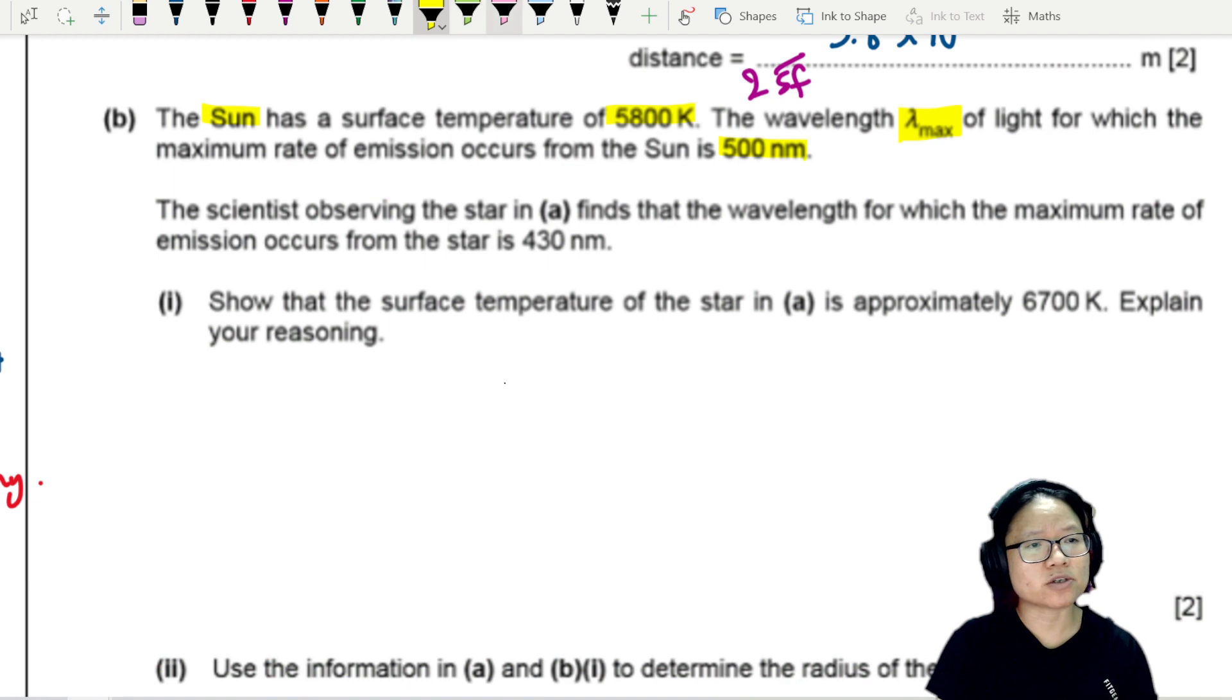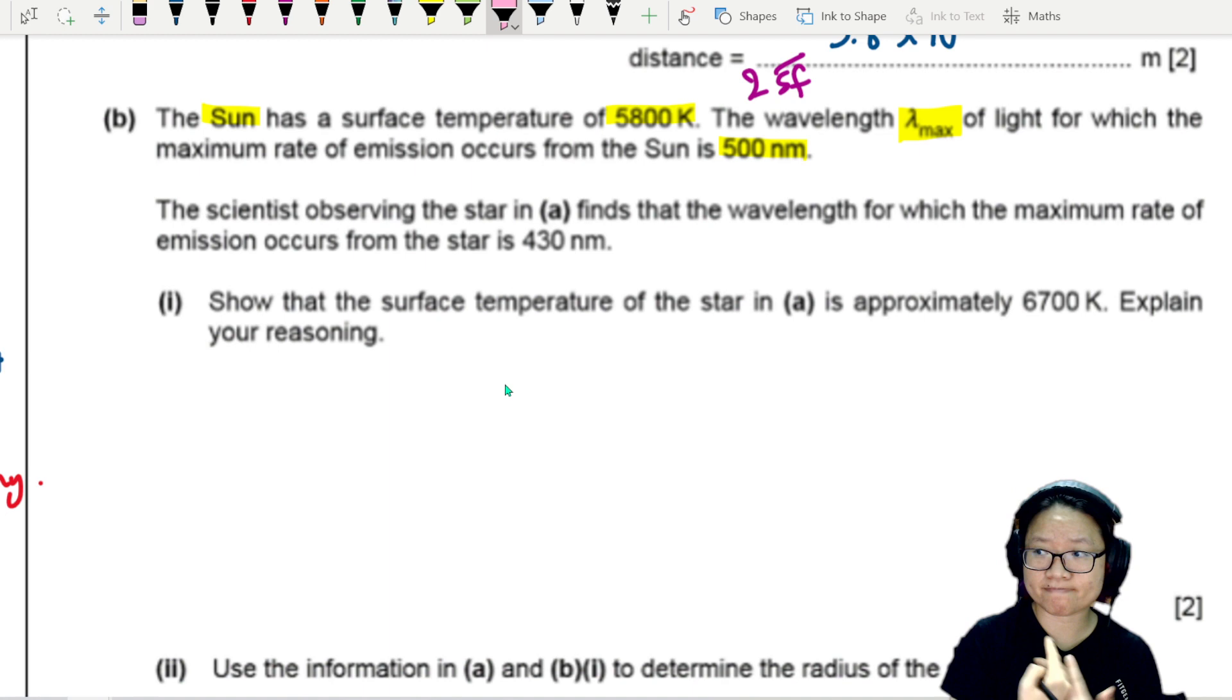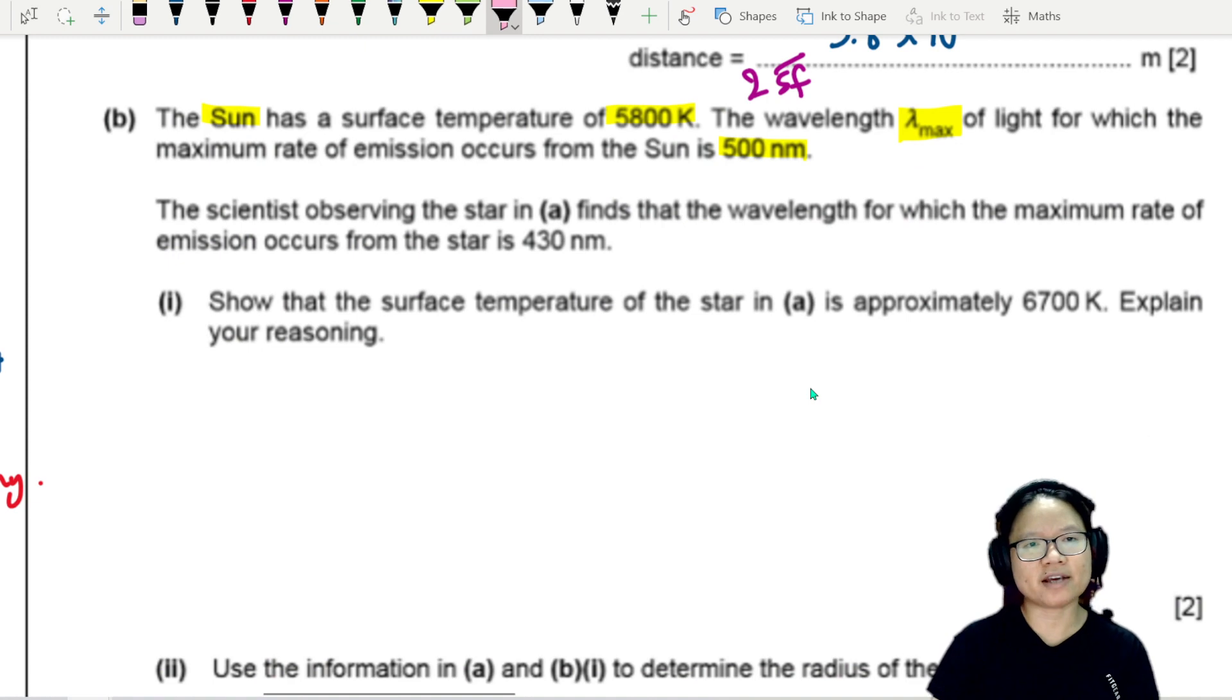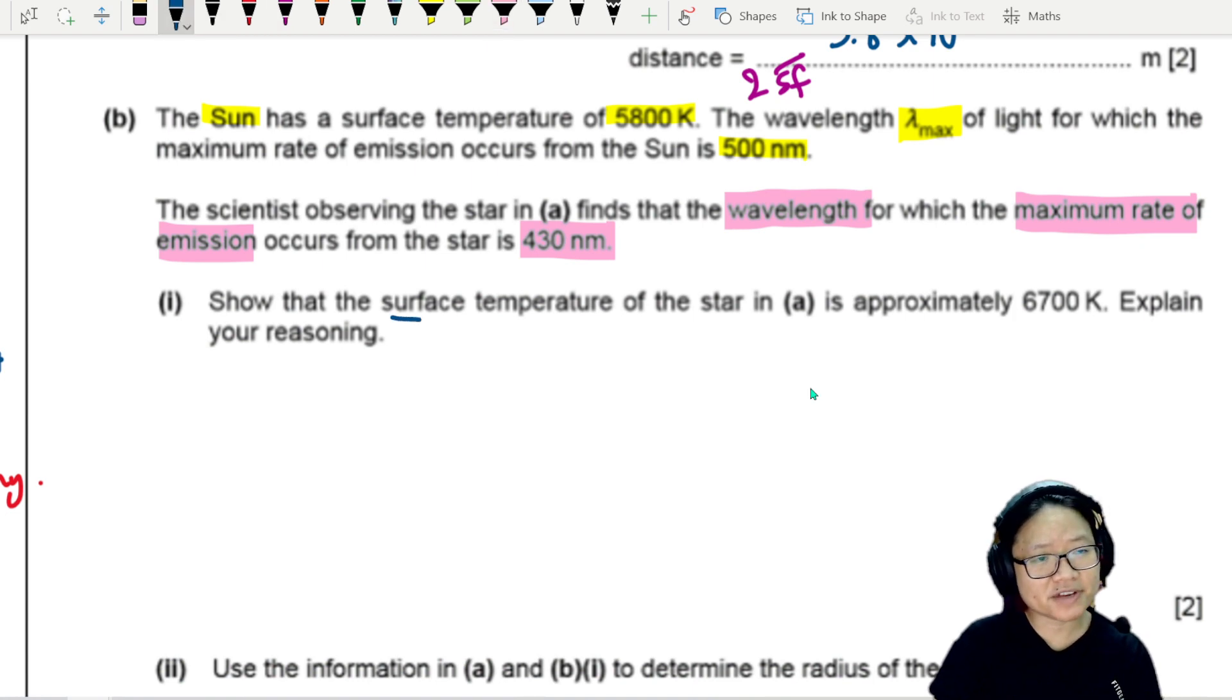The scientist observing the star in part A, still the same star that we talked about, 3.8 times 10 to the power 18 meters away from us, finds that the wavelength for which the maximum rate of emission occurs at 430 nanometers. Part one: Show that the surface temperature of the star is approximately 6700 Kelvin. Explain your reasoning.